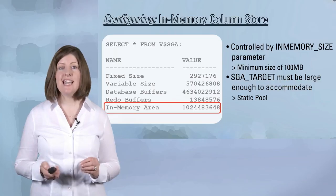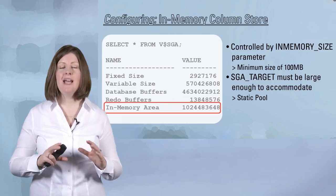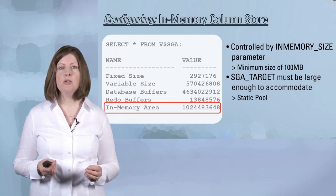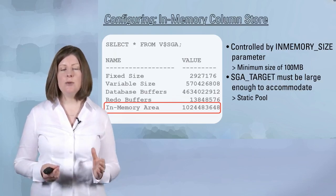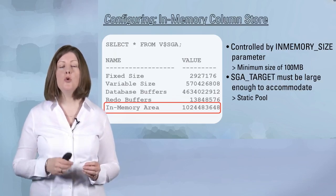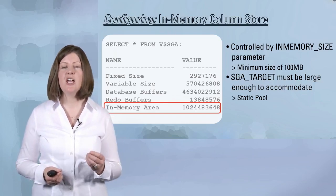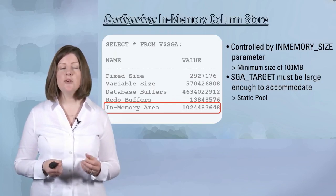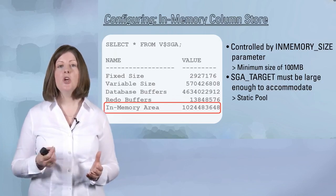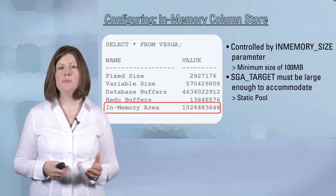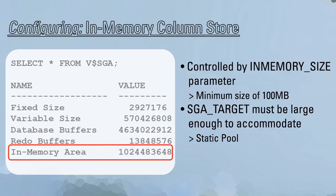Remember, it is a static pool, which means it is not controlled or managed using the automatic memory management algorithm that was introduced in 11G. It will neither grow nor shrink over the lifetime of the database. So you want to make sure when you're specifying your in-memory size that you make it large enough to accommodate all of the objects you need in the column store, and that the SGA target is set large enough to accommodate that new in-memory area as well as all the other existing components in your SGA.